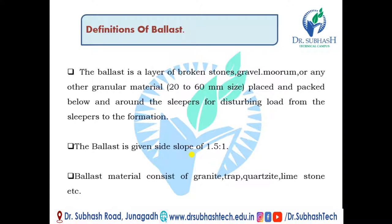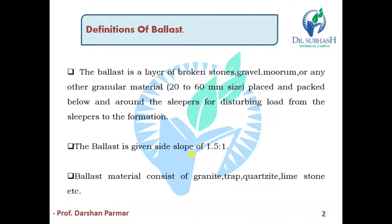Ballast material consists of granite, trap, quartzite, limestone, etc. So to summarize, ballast is broken stone, gravel, or different granular materials such as stones, gravel, or murum.